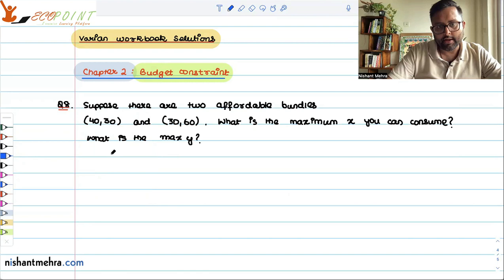Since both of them are affordable, it means that both of them are lying on the budget line. So for (40, 30), since this is lying on the budget line, we can write p1 times 40 plus p2 times 30 equals m. That is your first equation.